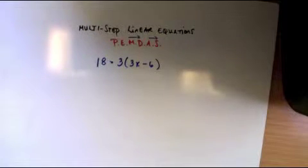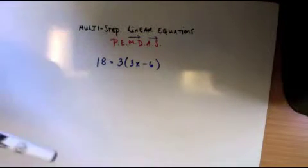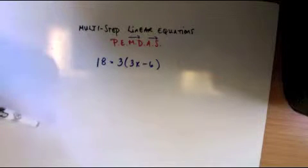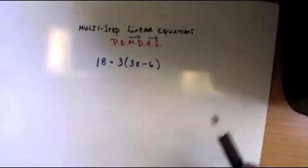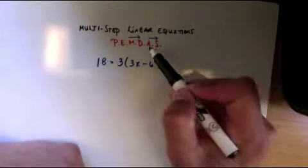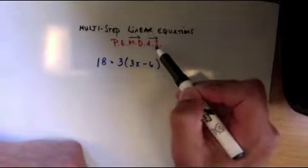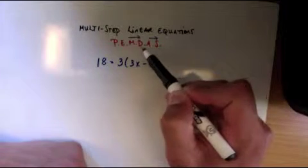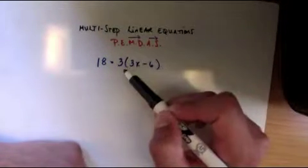Hey guys, today I want to talk about multi-step linear equations and how to solve these. We're going to use PEMDAS. You may remember from 6th grade you used the order of operations. Now to solve equations, we're doing the same thing but in reverse order. We're going to undo addition and subtraction first, then undo multiplication and division.